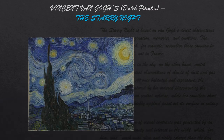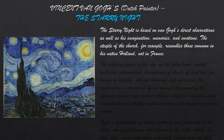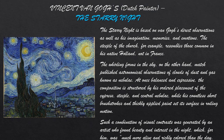Another famous painting is Vincent van Gogh's The Starry Night. The Starry Night is based on van Gogh's direct observation as well as his imagination, memories and emotions. The steeple of the church, for example, resembles those common in his native Holland, not in France. The whirling forms in the sky, on the other hand, match purplest astronomical observations of clouds of dust and gas known as nebulae.